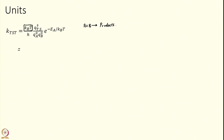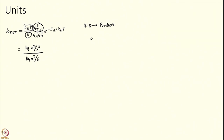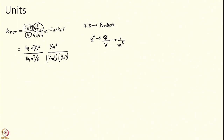k_B times T has units of energy. h (Planck's constant) has units of kilogram meter squared per second — basically energy times time. The partition function is dimensionless, but the q written here is the partition function per unit volume, so it has units of 1 over volume, which I will write as inverse meter cubed. In the numerator I have 1 over meter cubed, while q_A° and q_B° are each 1 over meter cubed, and the exponential is dimensionless.